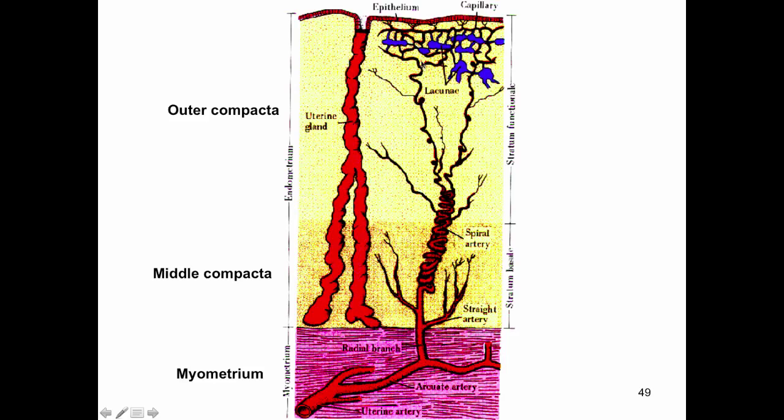The endometrium is going to receive this embryo. We talked about implantation. But an important part of development of the placenta and successful implantation and a successful pregnancy is a tremendous amount of remodeling that needs to happen of this endometrial lining. Remember we had our myometrial layer, our middle compacta layer that had all these spiral and straight arteries, we had the outer compacta layer. When this embryo starts to burrow into the endometrium, those syncytiotrophoblast cells start to invade the endometrial stroma.